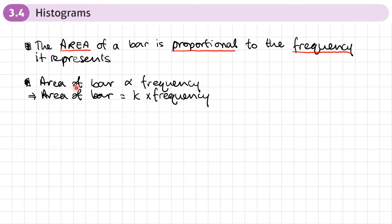So we can write that as area of bar is proportional to frequency, and then we can write it as area of bar equals a constant k times by the frequency. Now, if the value of k happens to be one, then the frequency density is equal to the frequency divided by the class width.